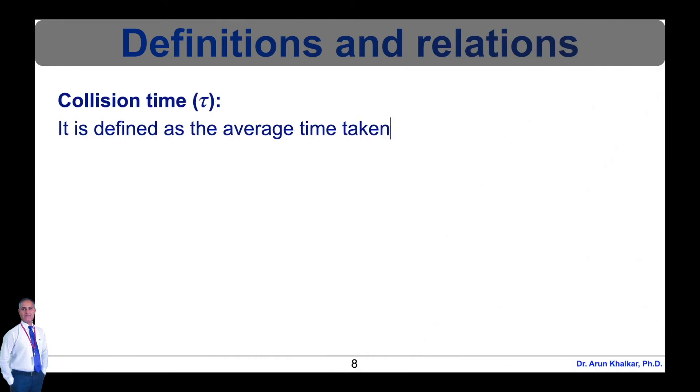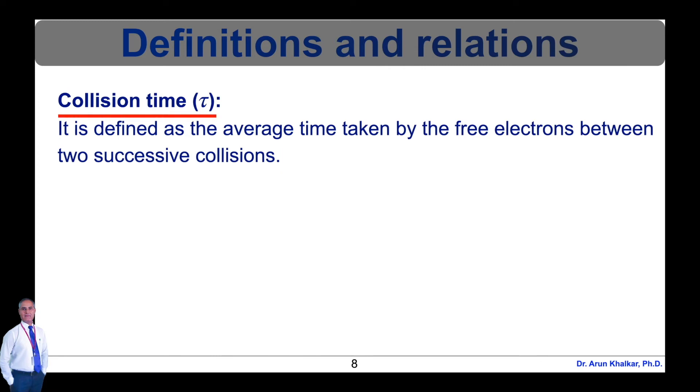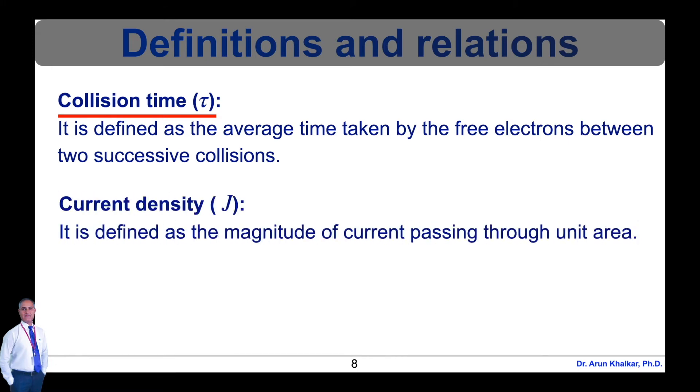Collision time is defined as the average time taken by the free electrons between two successive collisions. Current density is defined as the magnitude of current passing through unit area. So J equals I upon A, where J is current density, I is current, and A is the area.